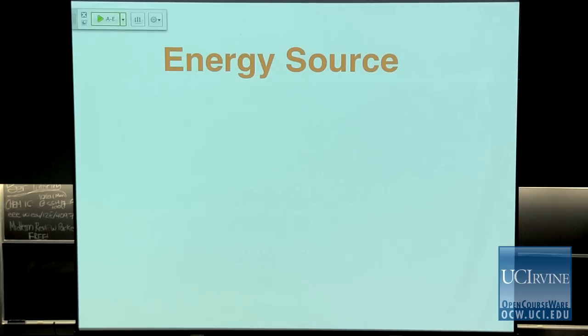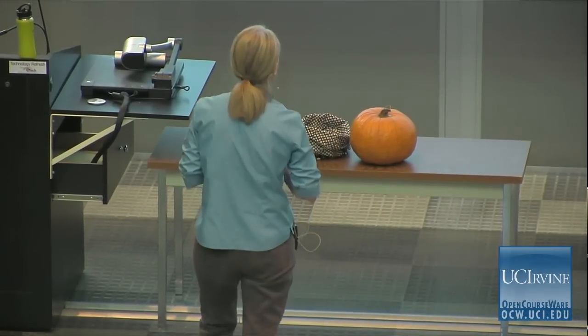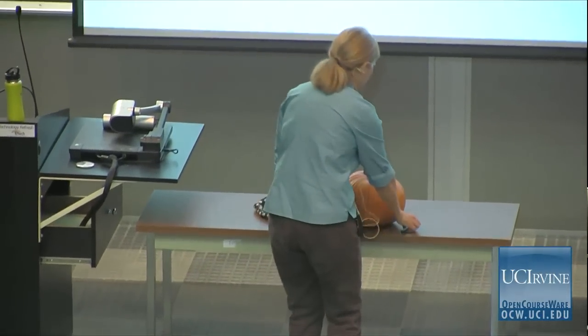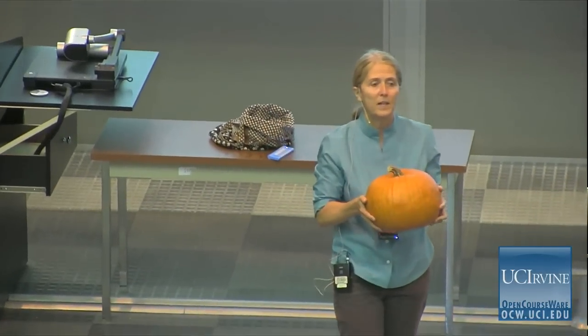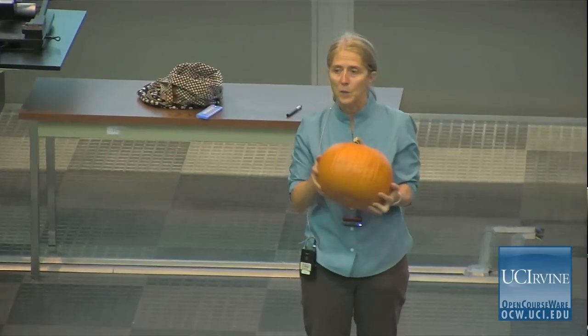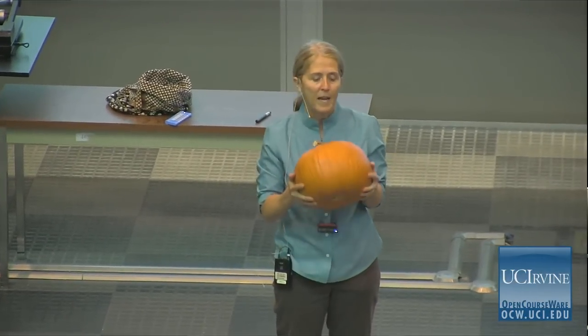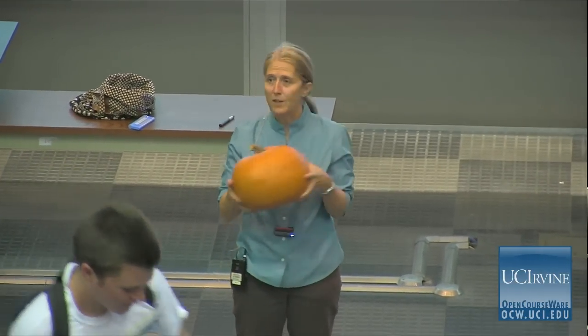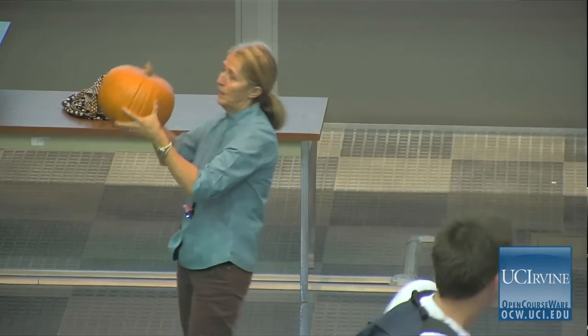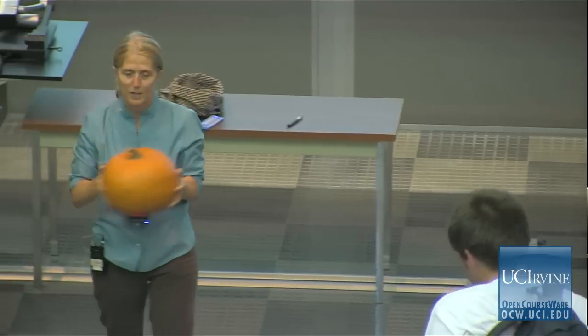We're going to start this unit by talking about energy sources. The cells in your body — all of their energy comes from the food that you eat. In honor of the upcoming Halloween holiday, I've brought a pumpkin to represent the fuel that our cells are going to use to do cellular work and generate ATP. I had to carry this from my lab on the medical side of campus, so I carried it a long way.